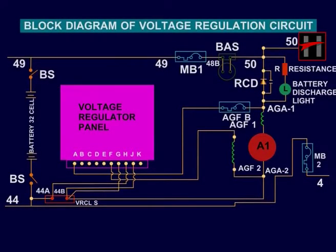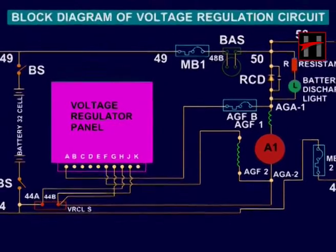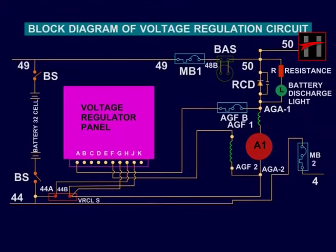This is the block diagram of the voltage regulation circuit of the diesel locomotive. The voltage regulation circuit has two functions: it regulates the voltage generated by the generator and feeds it to the control circuit, and it charges the batteries.